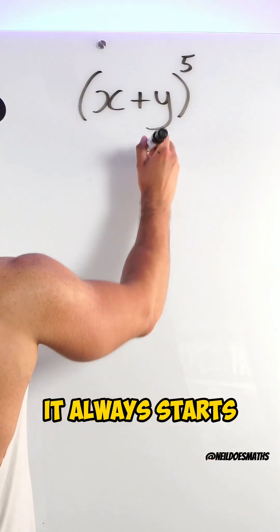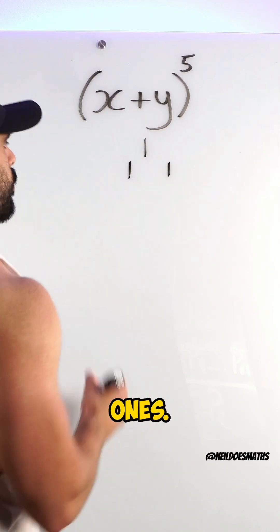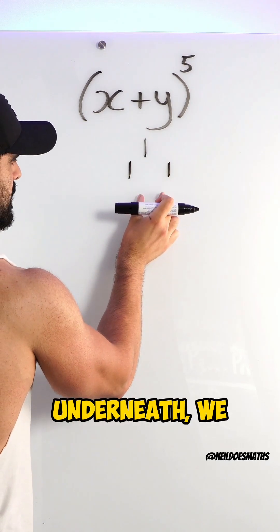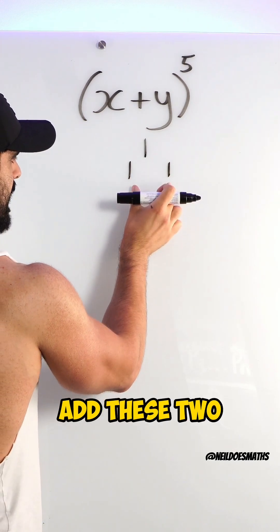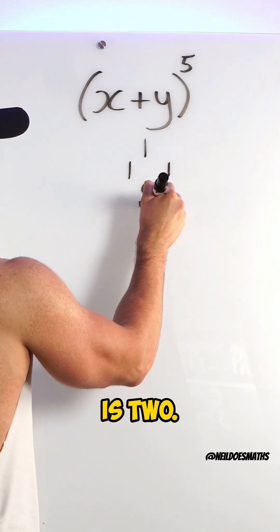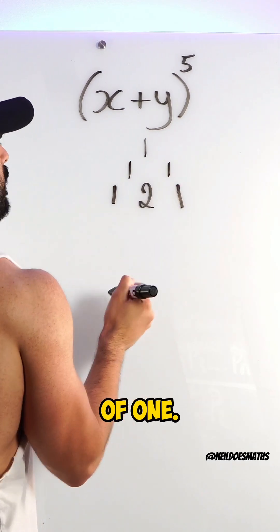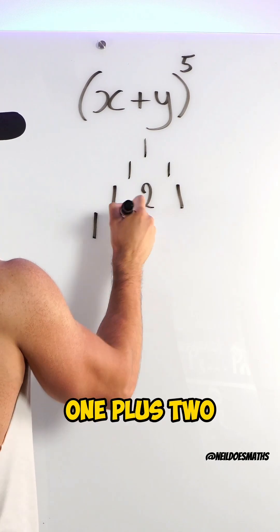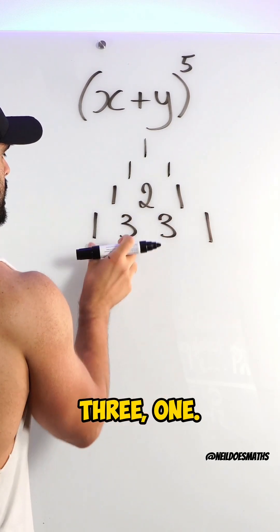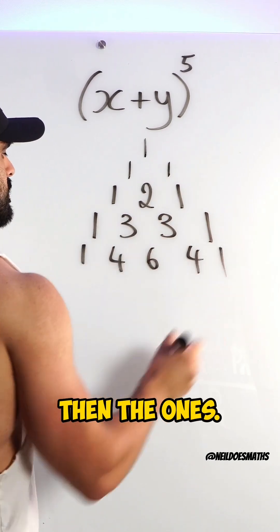It always starts with one and then a leading diagonal of ones. But then to get the digit underneath, we add these two numbers. One plus one is two. Don't forget the leading diagonals of one. Then we'll have one. One plus two is three. Three, one. Here we will have four, six, four, then the ones.